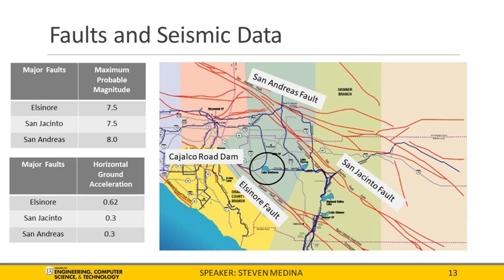The black circle on the map indicates the dam site location relative to surrounding fault lines. There are three major fault lines near the site: San Andreas, San Jacinto, and Elsinore. The Elsinore fault line is the closest to the project site but least active, with major seismic activity occurring every 250 years. The San Jacinto fault has major seismic activity every 200 years. The most active is the San Andreas fault with seismic activity occurring every 22 years. The Elsinore, San Jacinto, and San Andreas have probable magnitudes of 7.5 and 8 respectively. Since the Elsinore fault line is closest to the project site, it will have the largest effect, potentially reaching a horizontal ground acceleration of 0.6g.